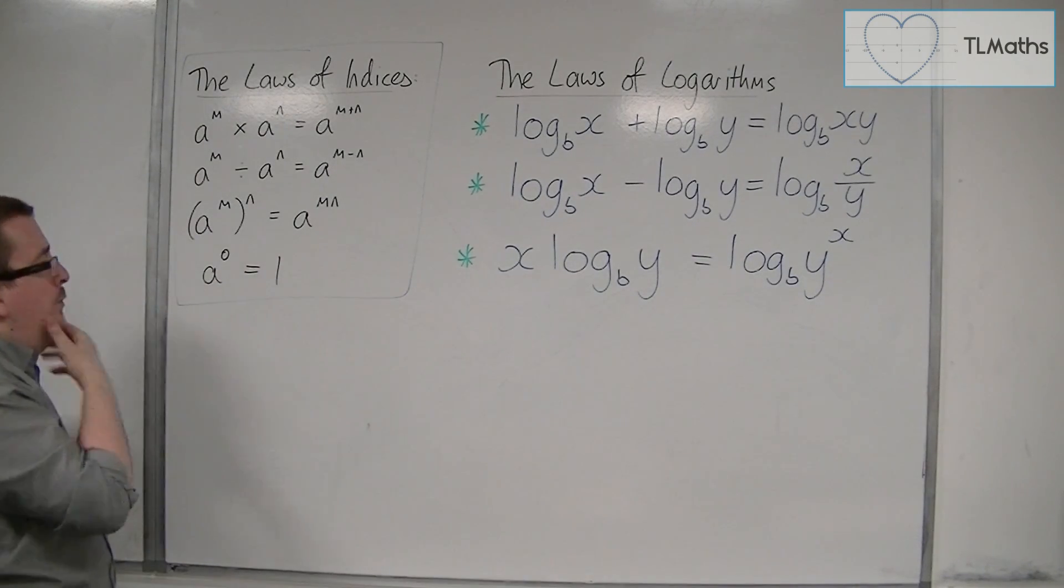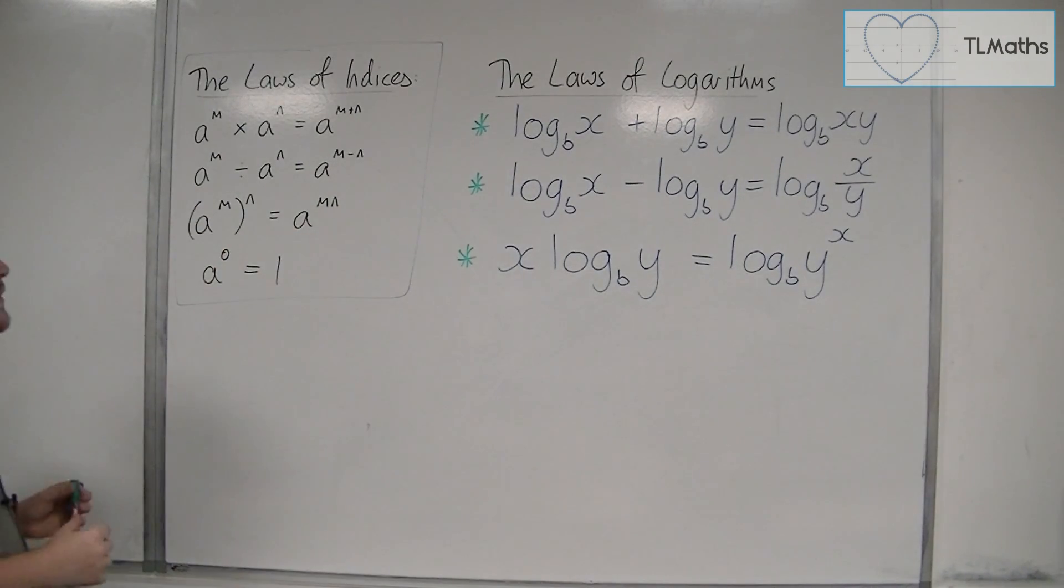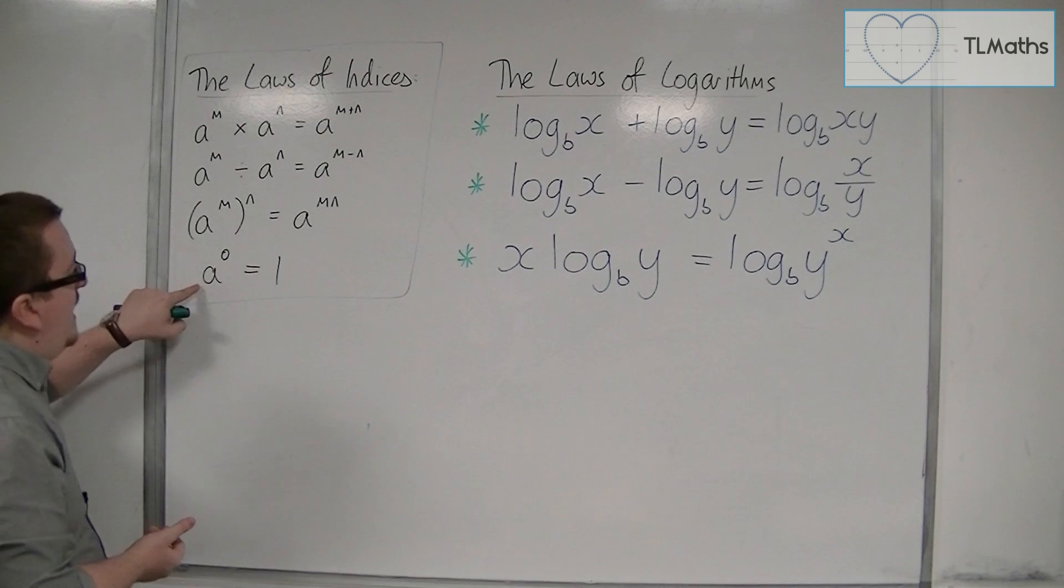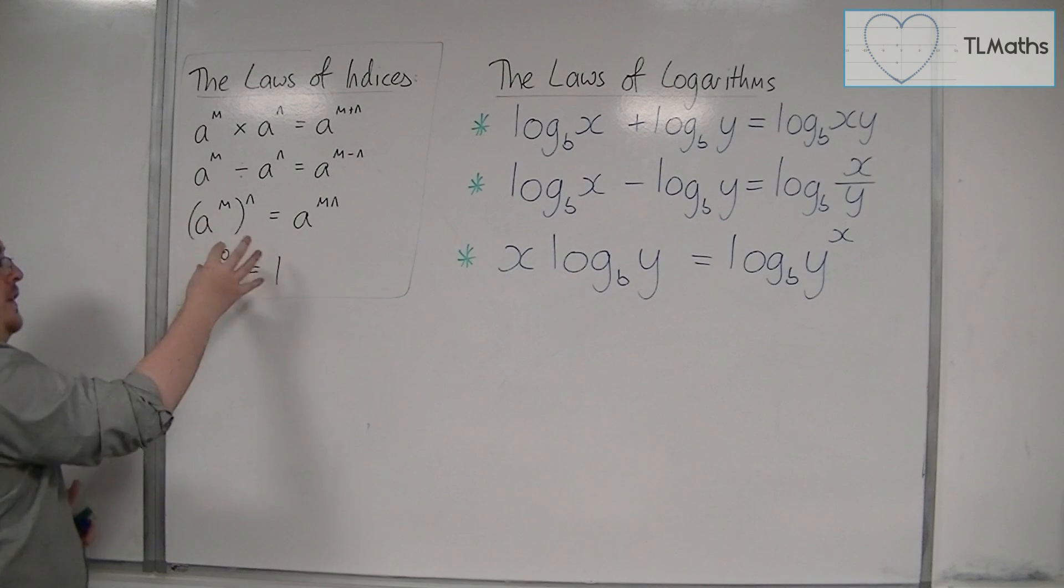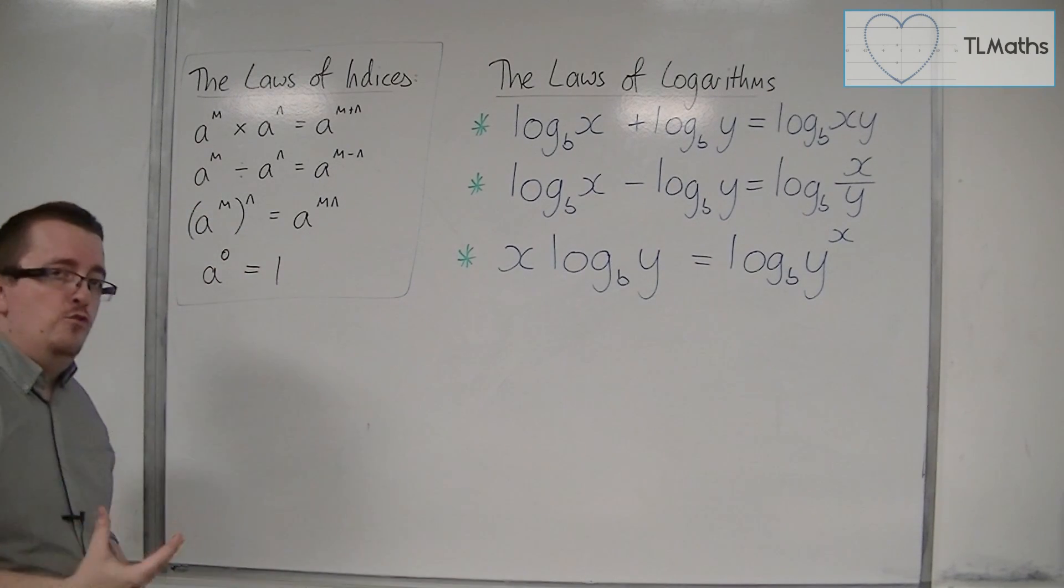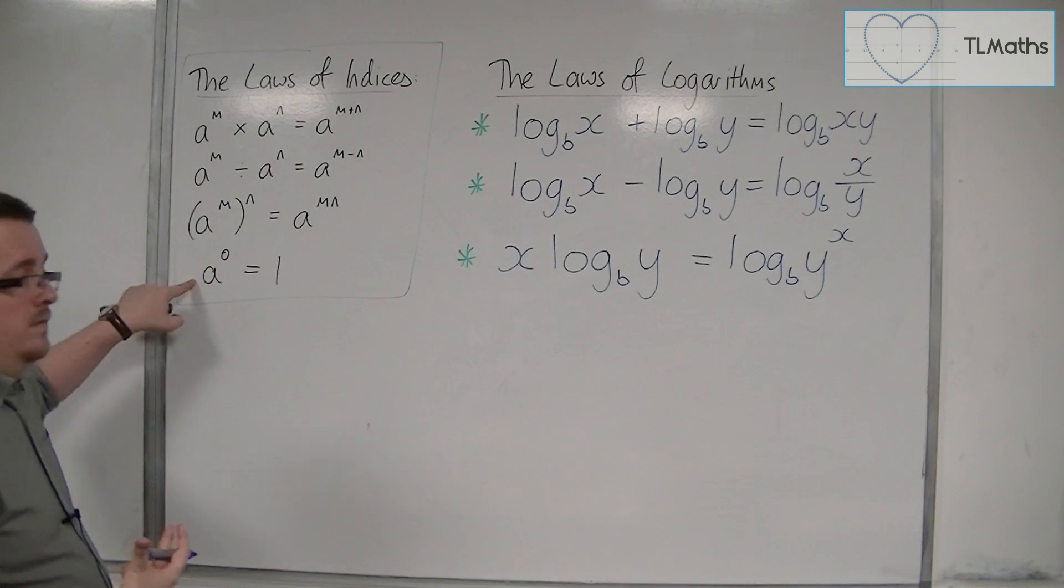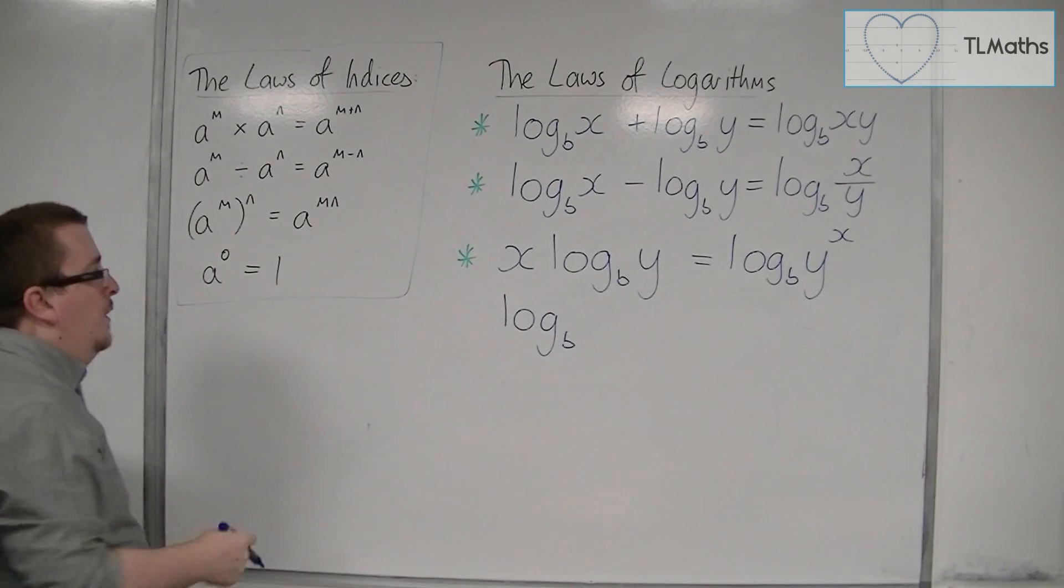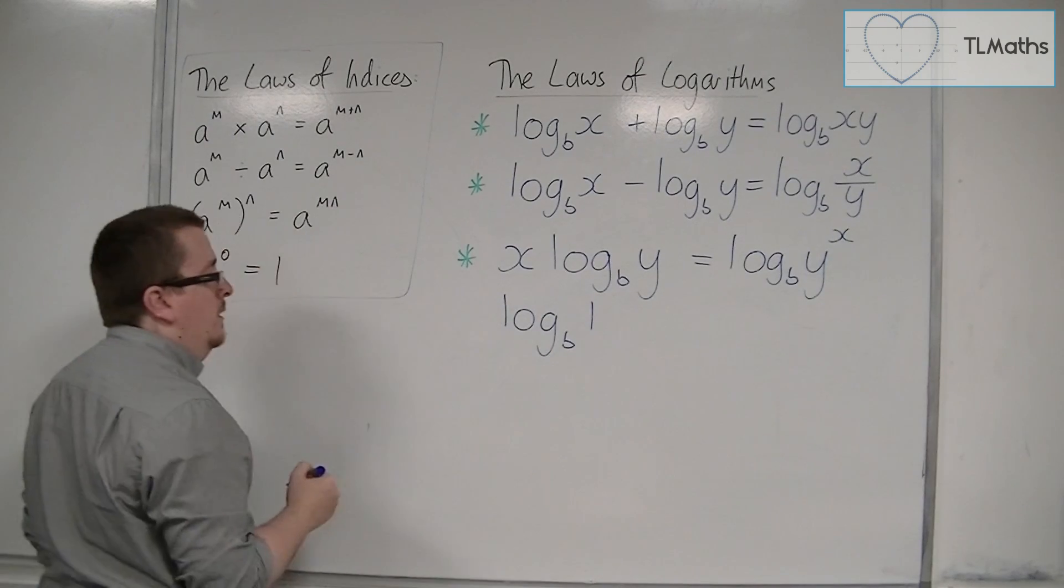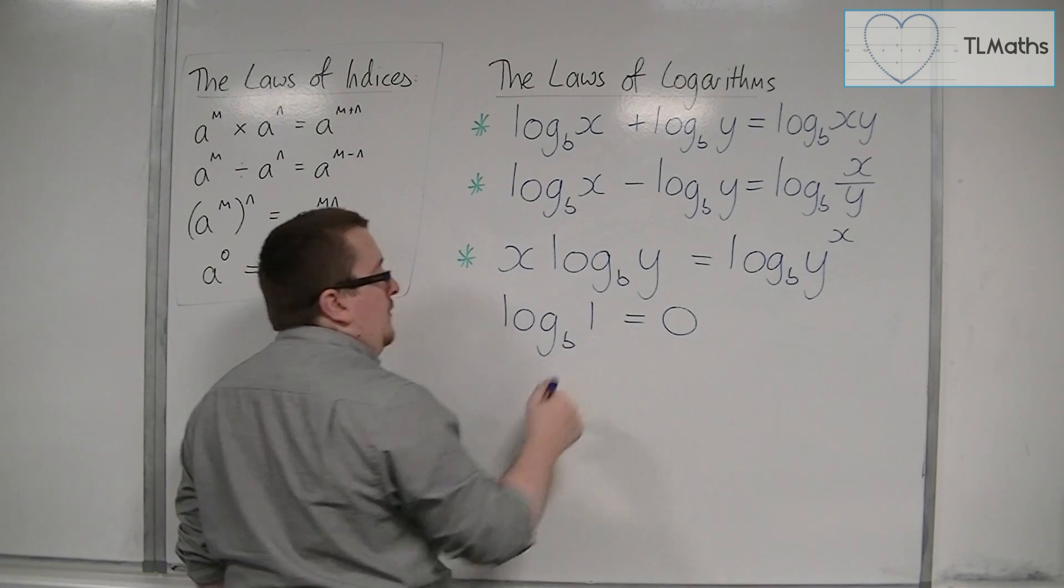We also have some consequences of indices that are important to link with logarithms. Firstly, a to the 0 is 1. If I convert this from exponential form to logarithmic form, log base b of 1 would be 0, because b to the power of 0 is 1.